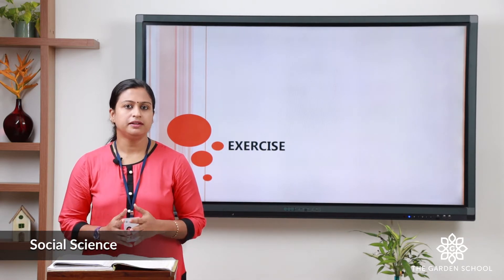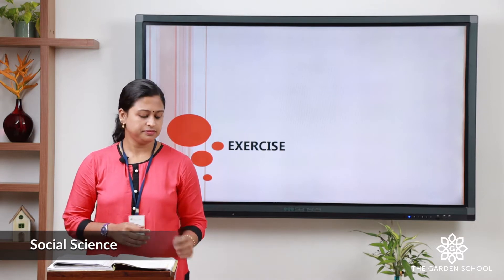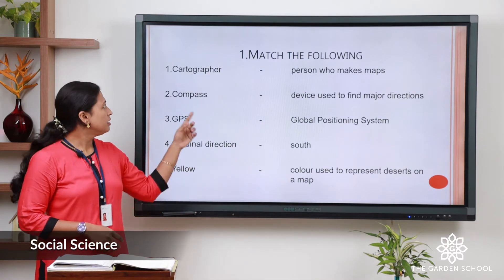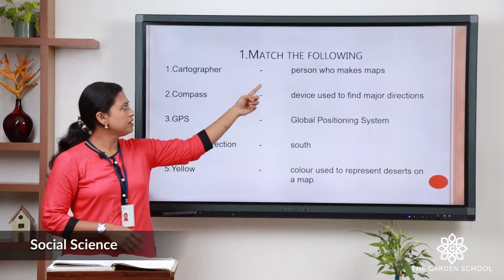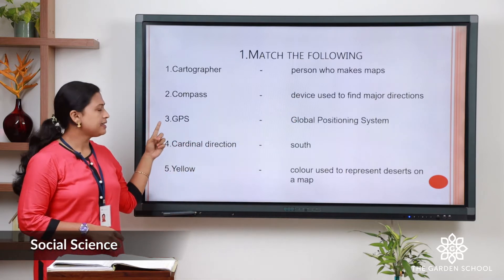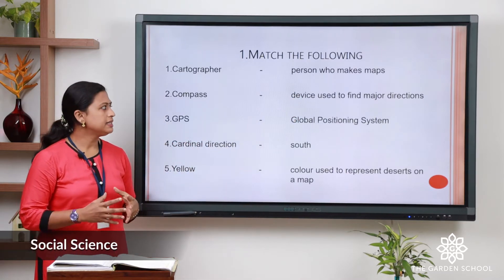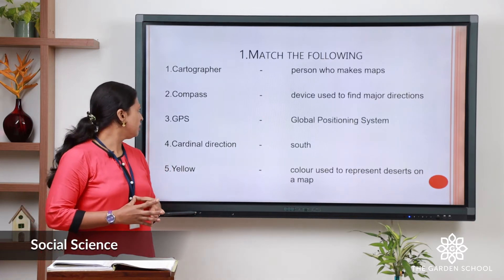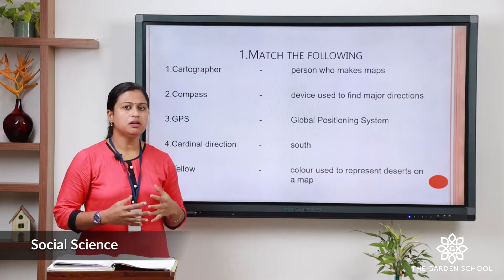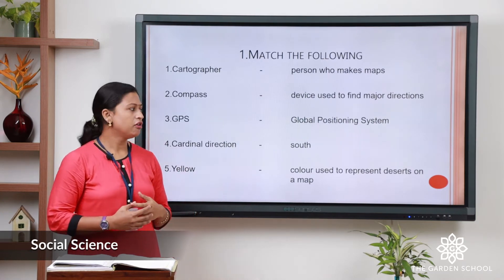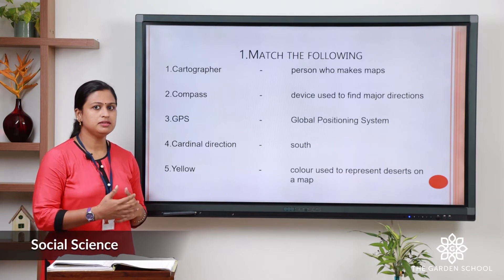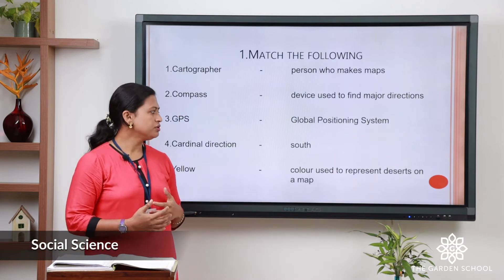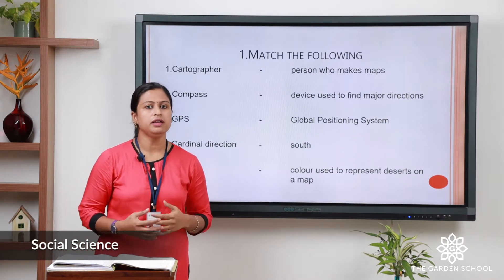I hope you all did it. Now let us check the answer. This is the correct answer. Cartographer is a person who makes map. Second, compass — it is a device used to find major directions. Third, GPS — it is global positioning system. Fourth, cardinal direction is south. Fifth, yellow — it is a color used to represent deserts on a map.